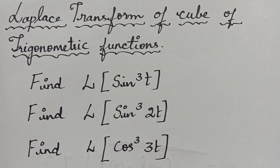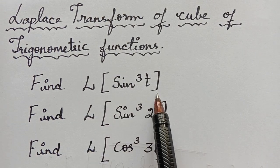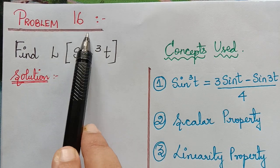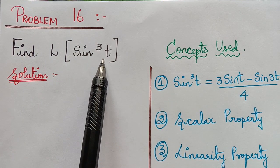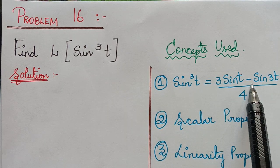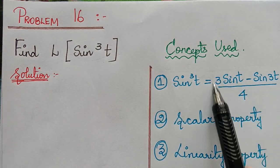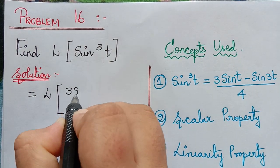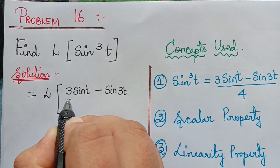The first problem is to find the Laplace transform of sin³t. This is problem number 16; kindly follow the previous lectures to learn problems 1 to 15. By the trigonometric identity, sin³t = (3 sin t − sin 3t) / 4. So instead of sin³t we replace it by this identity, giving us the Laplace transform of (3 sin t − sin 3t) / 4.